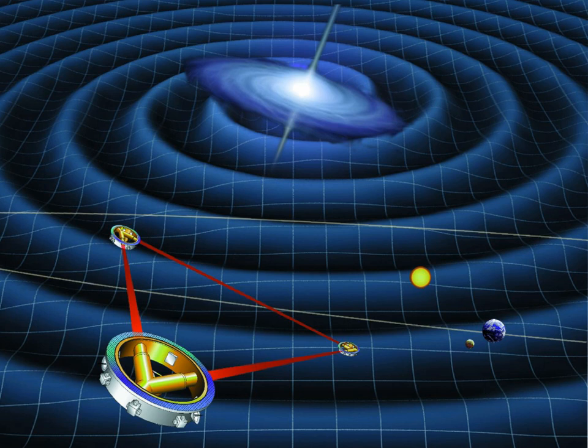LISA will be able to detect the gravitational waves from the merger of a pair of massive black holes with a chirp mass between 10^3 and 10^7 solar masses all the way back to their earliest formation at redshift around Z ≤ 15. The most conservative population models expect at least a few such events to happen each year.